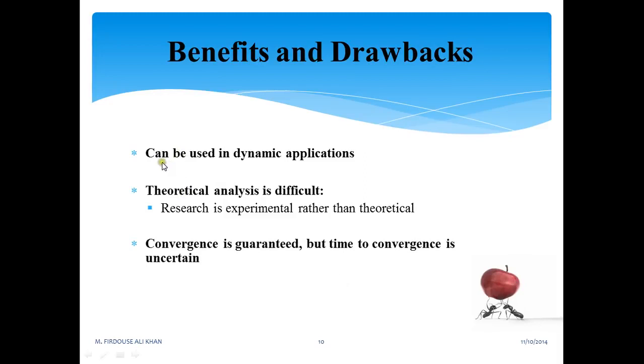Of course, for every technology, benefits and drawbacks are there. This one can be used in dynamic applications. Theoretical analysis is difficult; research is experimental rather than theoretical. Convergence is guaranteed, but time to convergence is uncertain. Convergence is guaranteed, although the speed is unknown.